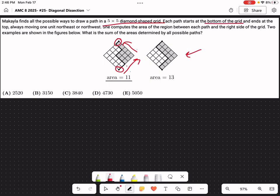Moving one unit northeast or one unit this way, she computes the area of the region between each path and the right side of the grid. So the outline of the path and the area between this right side, this shaded part, is going to be the area of that path. Two examples are shown in the figures below. What is the sum of the areas determined by all possible paths?